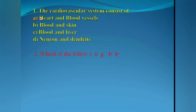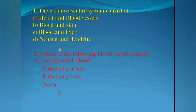Which of the following blood vessels consists of deoxygenated blood? Options: pulmonary artery, pulmonary vein, aorta, or carotid artery. All arteries carry oxygenated blood, but the pulmonary artery carries deoxygenated blood. The heart is involved here.